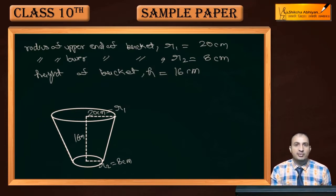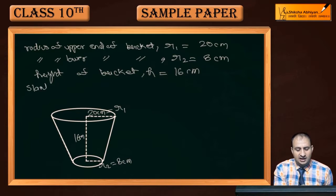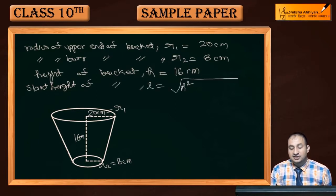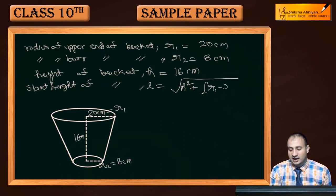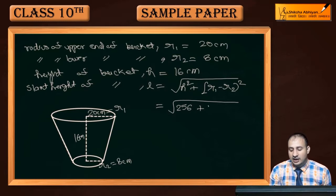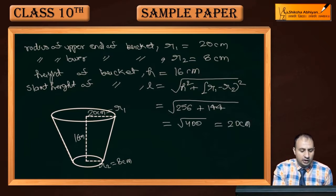For slant height: l = √(h² + (r1 - r2)²) = √(256 + 144) = √400 = 20 cm. So the slant height l = 20 cm.